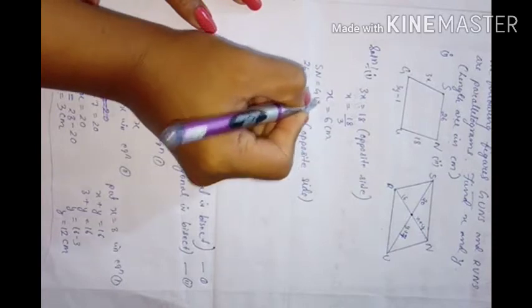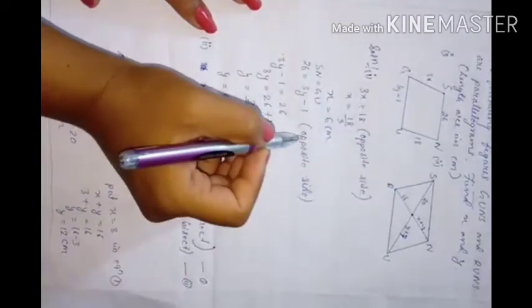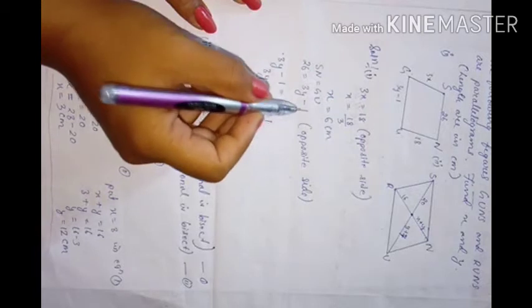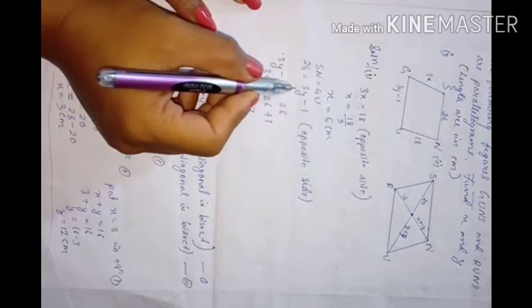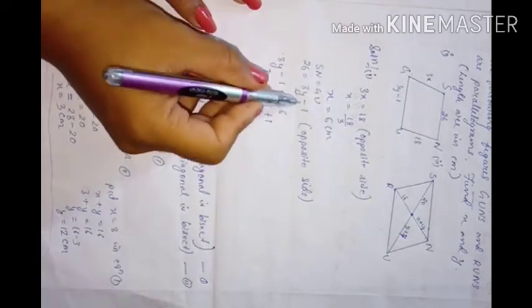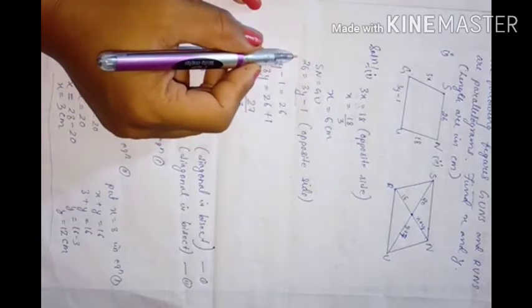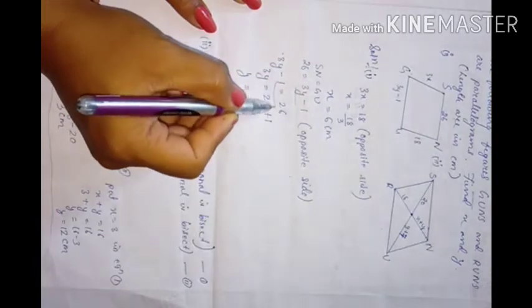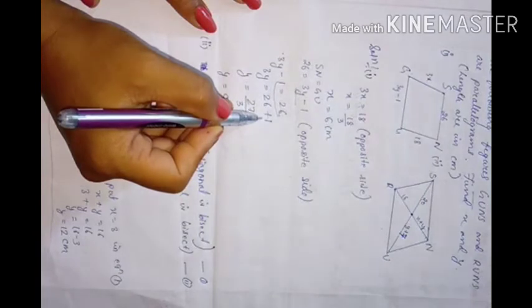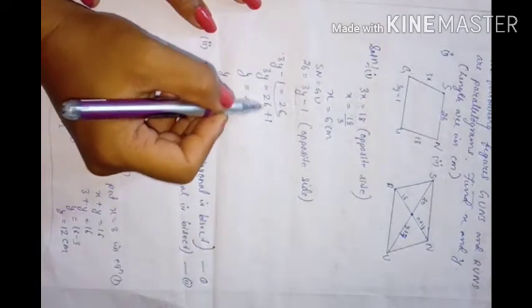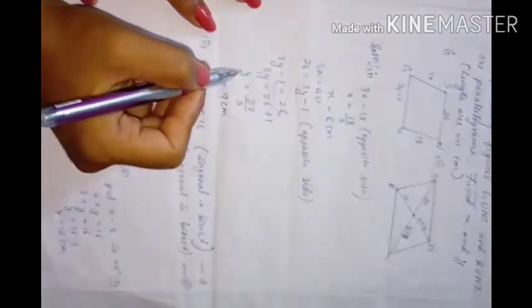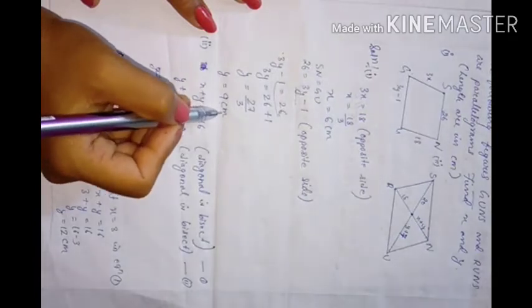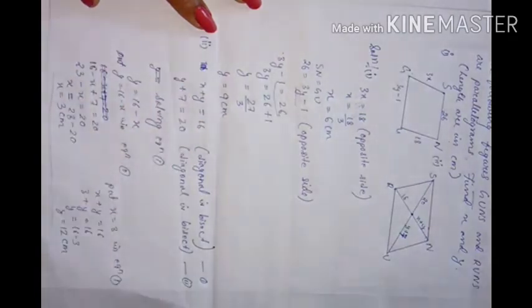SN equals GU since they are opposite sides. So 3y minus 1 equals 26. Transferring minus 1 to the right side: 3y equals 27, so y equals 9 centimeters.